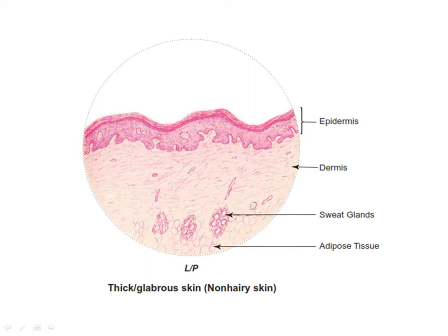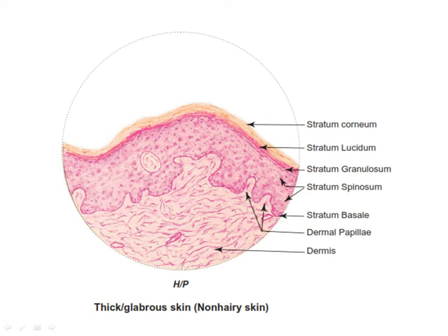This is thick skin, in which the epidermis is thick compared to thin skin. It has no hair follicles, no sebaceous glands — only sweat glands are present. In this high-power picture of thick skin we see the different layers of the epidermis and dermal papillae, with no hair follicles and no sebaceous glands.